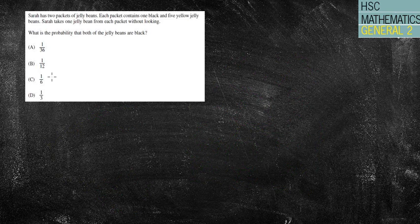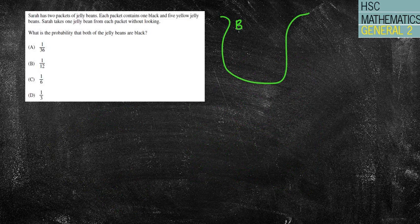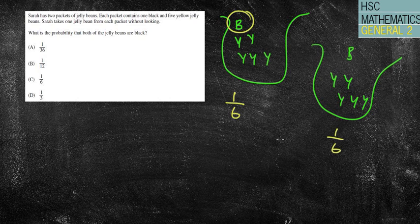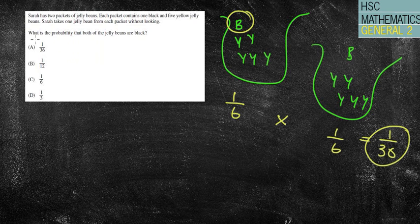Sarah has two packs of jelly beans. Each pack contains one black and five yellow jelly beans. She has two packets of this. Sarah takes one jelly bean from each packet without looking. What's the probability that both of the jelly beans are black? Because the probability won't change for both of them, it's like the dice question with two sixes. I've got one in six chances here. I've got one in six chances here. Therefore, both of them happening are going to be one in 36 chances, which will give me that answer.